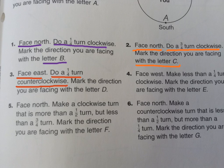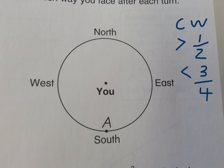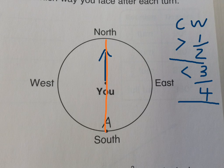Number four you should be able to do on your own. Number five is trickier: facing north, going clockwise, more than a half turn but less than a three-fourths turn, and marking it with an F. Divide the circle into quarters to check. Going clockwise, half is here, but less than three-fourths — so anywhere along that section is appropriate for the letter F.